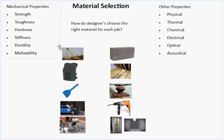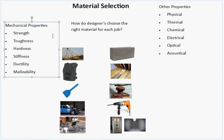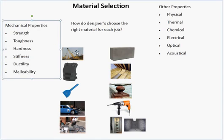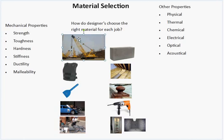The first thing we're going to look at are the mechanical properties. The first of those is strength. Looking at this image of a crane, we want the crane not to fail under its normal working conditions. Strength is the material being able to resist any force that's applied to it, and it's always a good answer to put in a question.